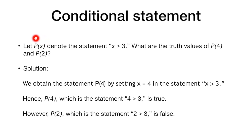Let's see another example. Let P(x) denote the statement x greater than 3. What are the truth values of P(4) and P(2)? We just have to substitute x by the specific value. P(4) will be the statement '4 greater than 3', which is a proposition, and its truth value is true. And P(2) will be the statement '2 greater than 3', which is also a proposition, and in this case it is false.